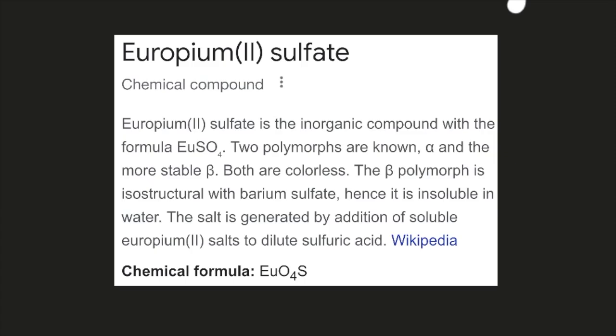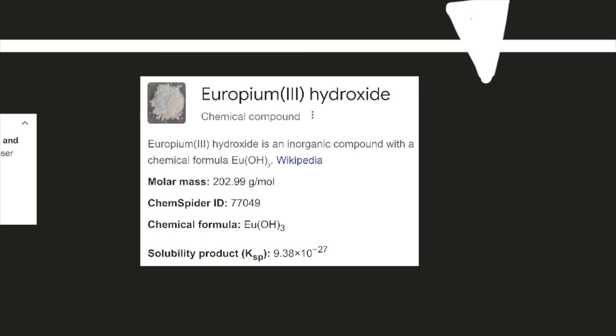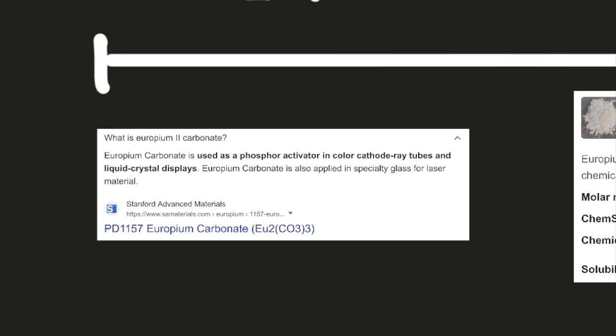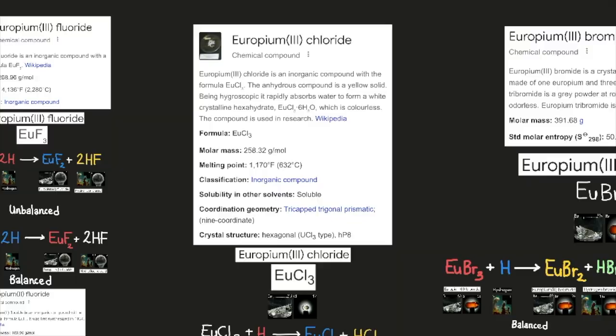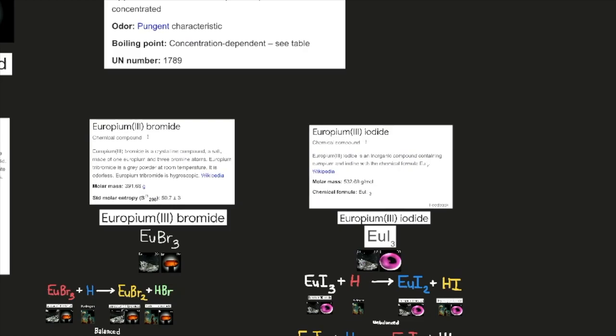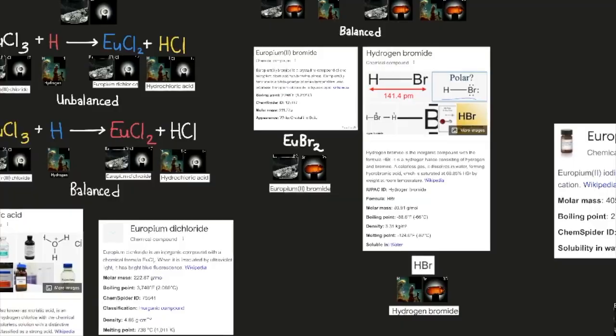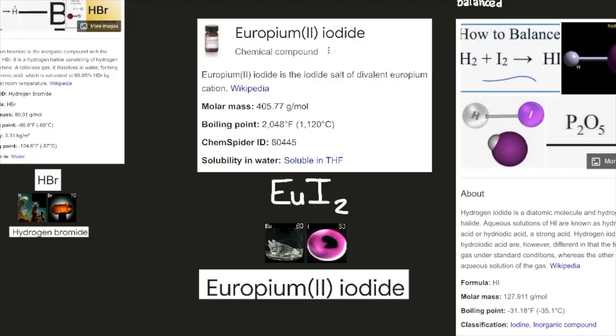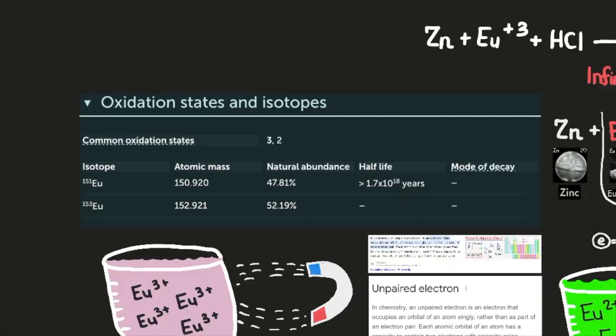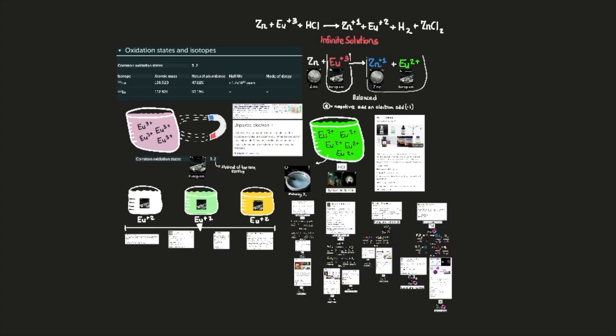So the molecules of europium presented are europium 2 sulfate, europium 3 chloride, europium 3 bromide, europium 3 iodide, europium 2 fluoride, europium dichloride, europium 2 bromide, and europium 2 iodide. Here we have the oxidation states and isotopes of europium, europium-151 and europium-153.